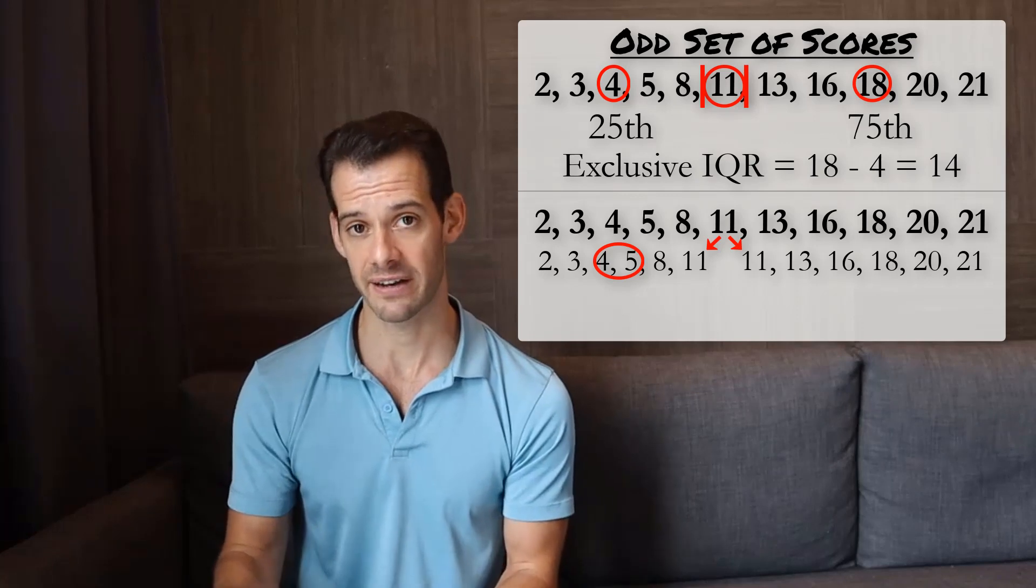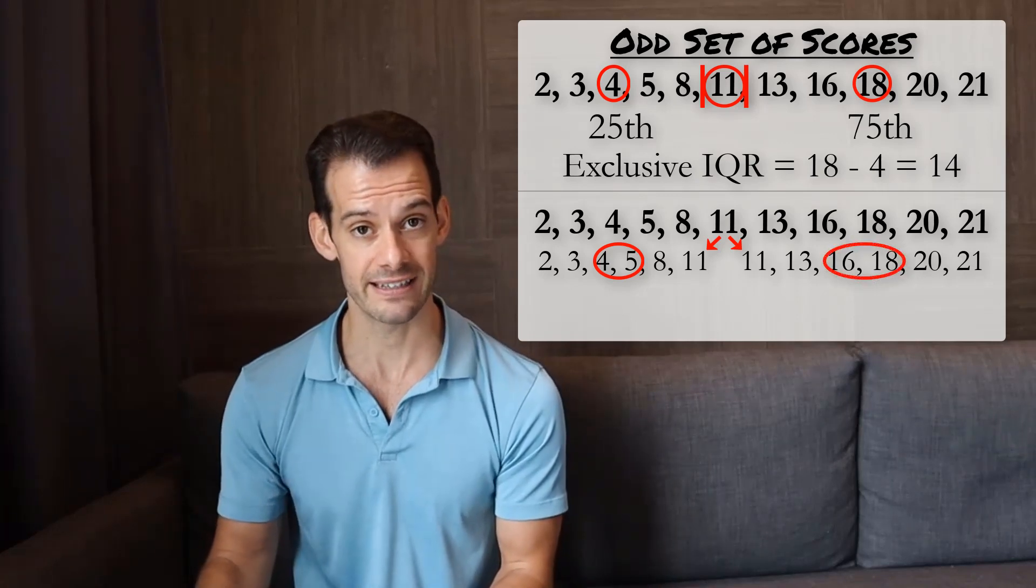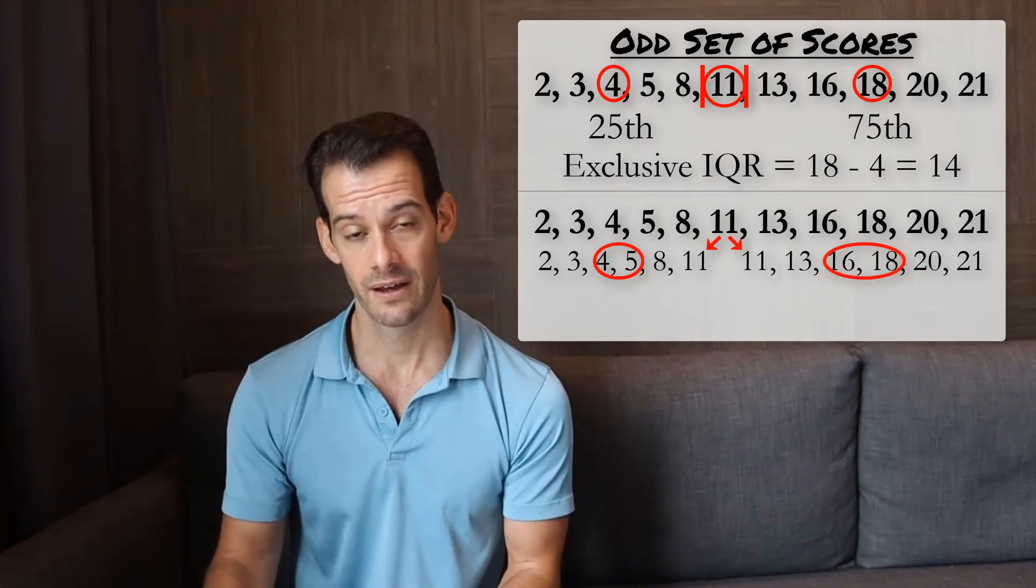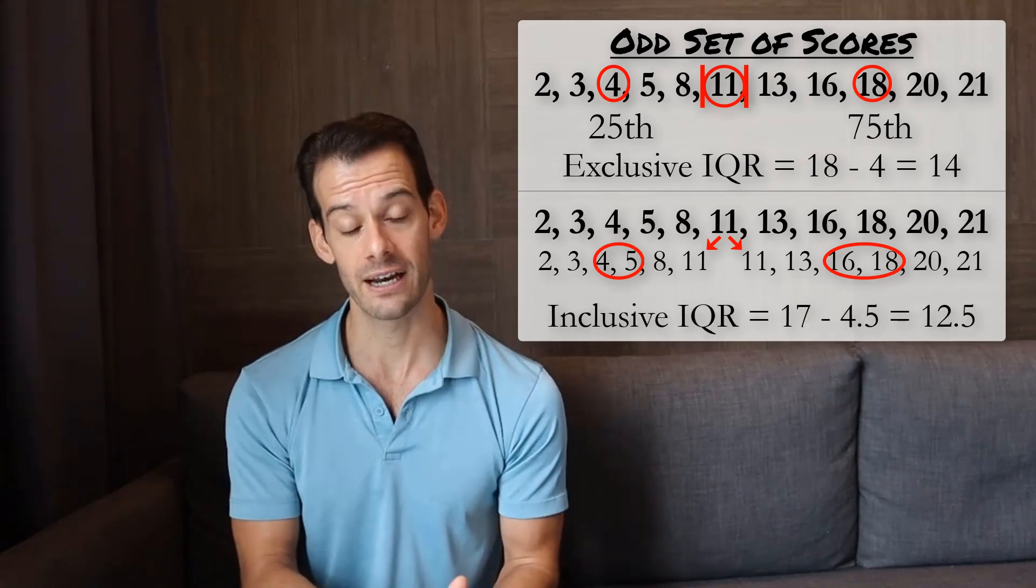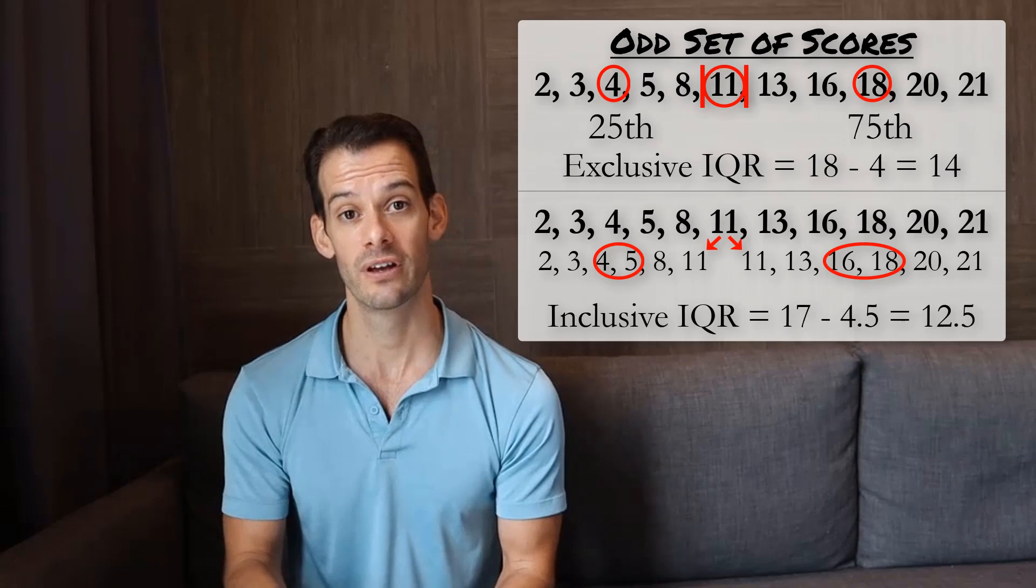And the 75th percentile would be the mean of 16 and 18, which would be 17. So now we'd have an inclusive interquartile range of 17 minus 4.5 equals 12.5.